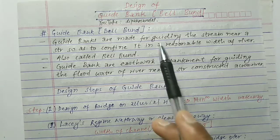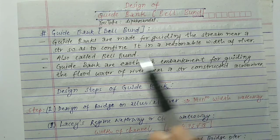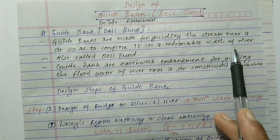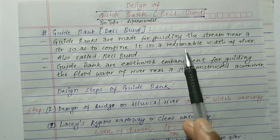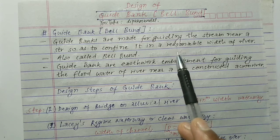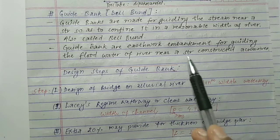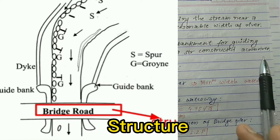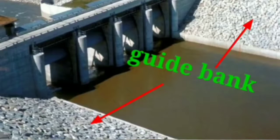Guide banks are especially provided for guiding the stream near a structure so as to confine it in a reasonable width of the waterway, keeping it safe from scouring near that point. Guide banks are embankments for guiding the floodwater of a river near a structure constructed across the river. You can see the 3D figure of guide bank here.